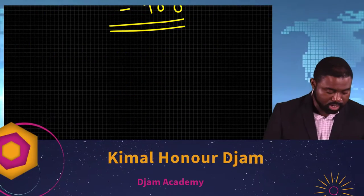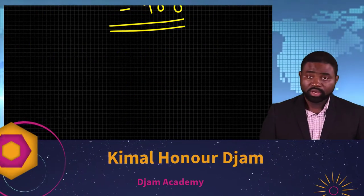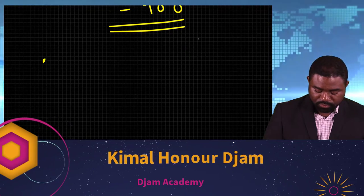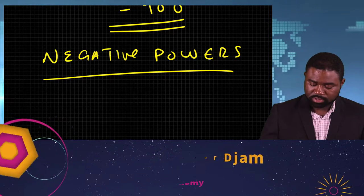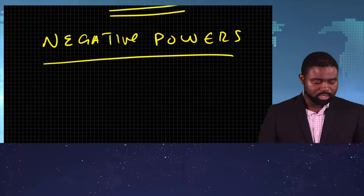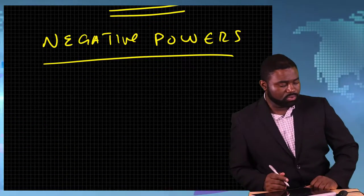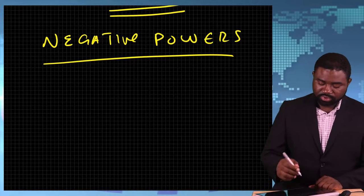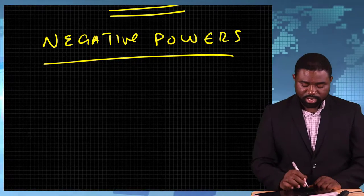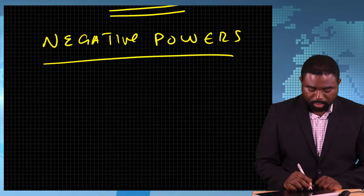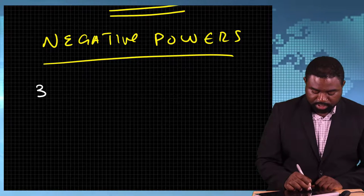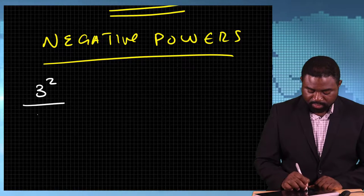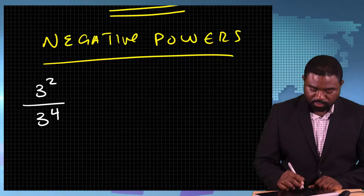Here we are going to look at negative powers. I'll do that by looking at an example. Let's say we have 3 raised to the power 2 divided by 3 raised to the power 4.